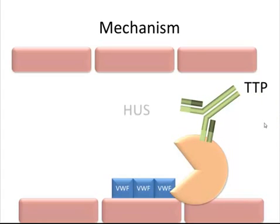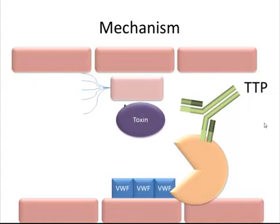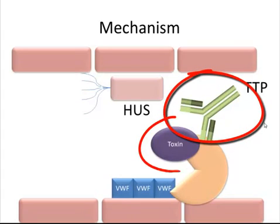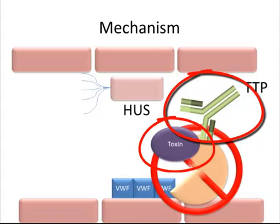Similarly, in a disease called HUS, bacteria release toxins that then inhibit this enzyme. So whether this enzyme is inhibited by an antibody or a toxin, it still is inhibited.